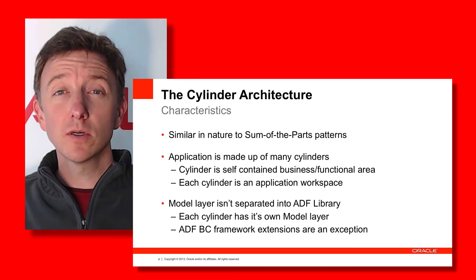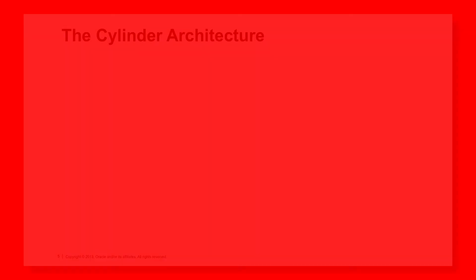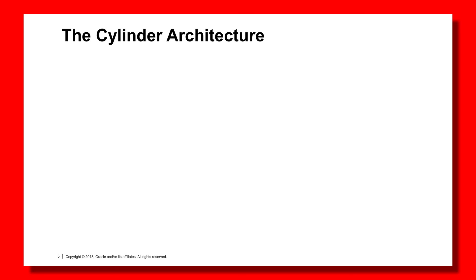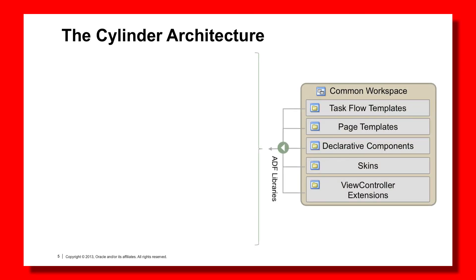Let's look at this diagrammatically. In the Cylinder architecture, like the Sum of the Parts architecture, we will still have a common workspace. This will contain things which are common, such as Task Flow templates, Page Templates, Declarative Components, Skins and other ViewController extension type classes. The projects that contain them will be published as ADF Library Jars and re-consumed by the rest of the application.